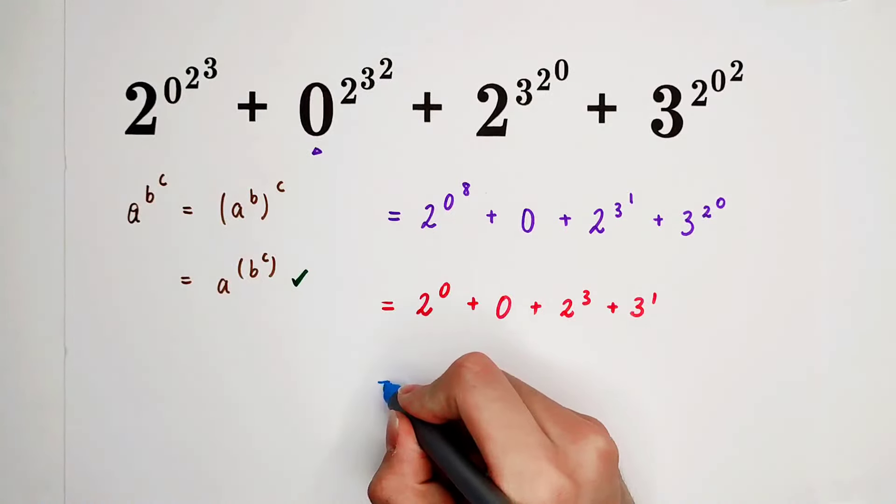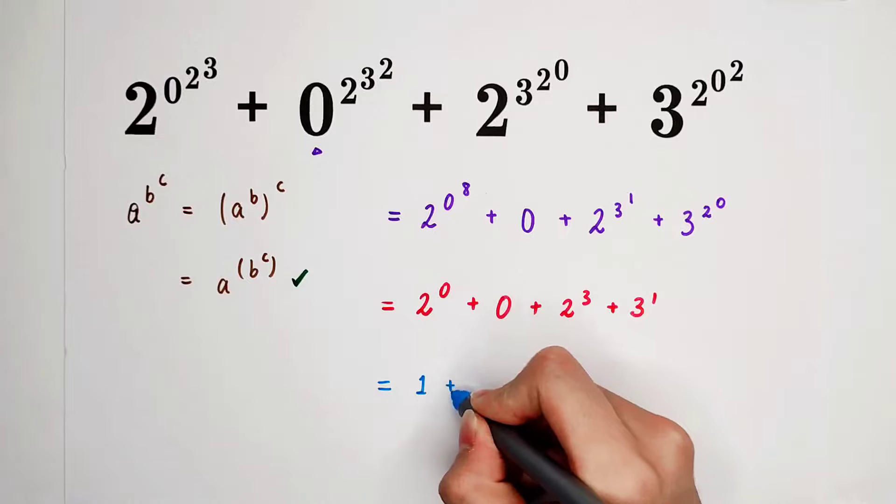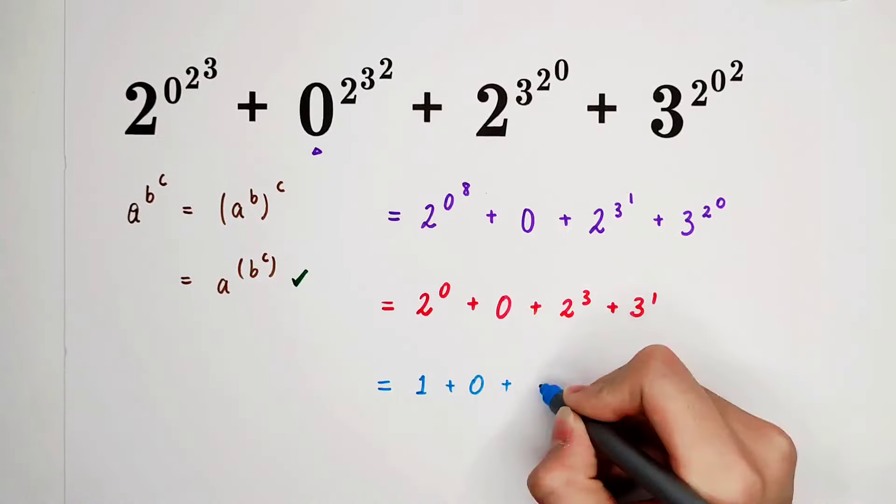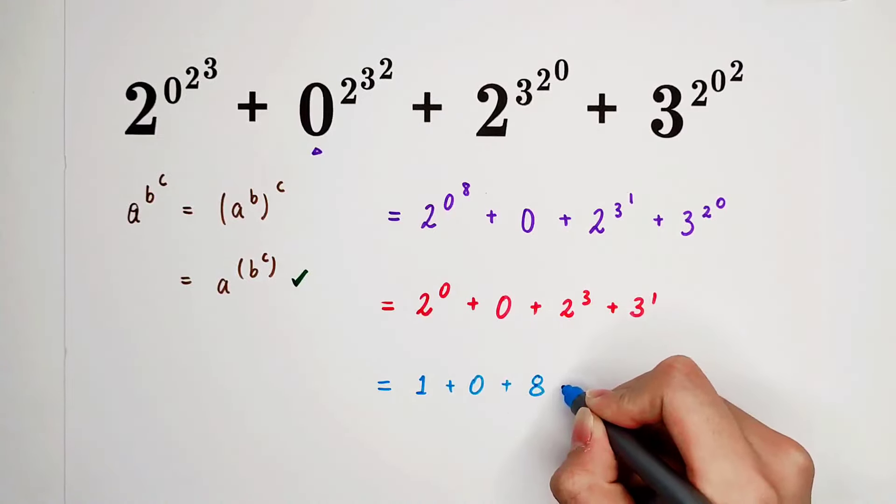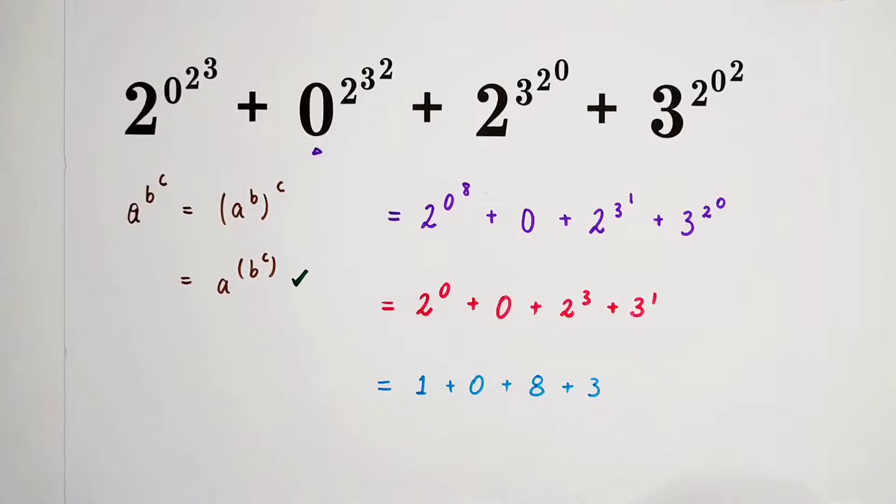And then it is 2 to the power of 0 is 1 plus 0 plus 8 plus 3. So the answer is, of course, the answer is not 1083. No. It is 1 plus 0 plus 8 plus 3. It is 12.